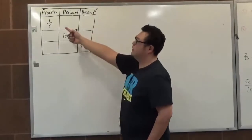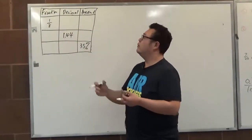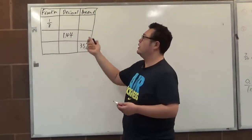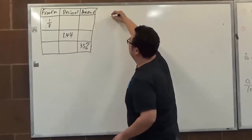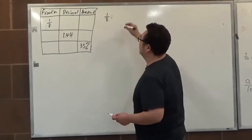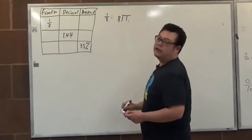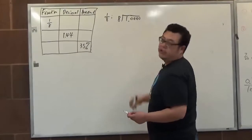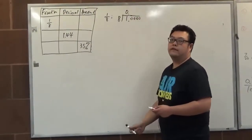If we have 1 over 8 given as fractional form, we are able to convert it to decimal by just dividing the fraction — dividing 1 by 8. The decimal point is right after 1 and we have many zeros following. 8 goes into 1, that's 0, and we have the decimal point right up.